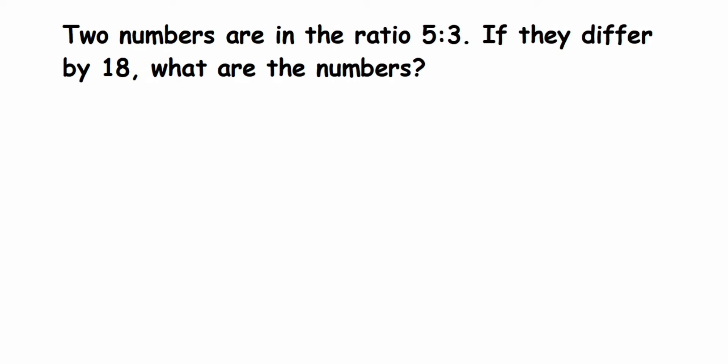Now let's start the problem. Two numbers are in the ratio 5:3, which means the two numbers are 5x and 3x. Let's start the solution. So let the two numbers be 5x and 3x.